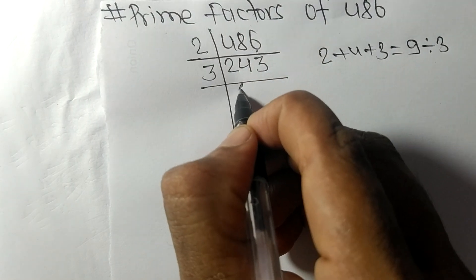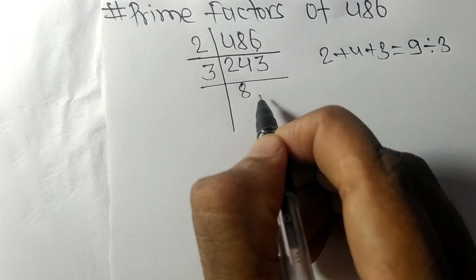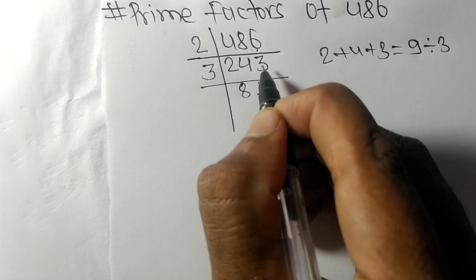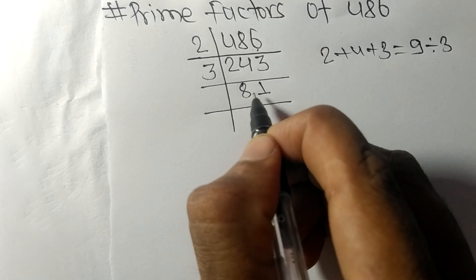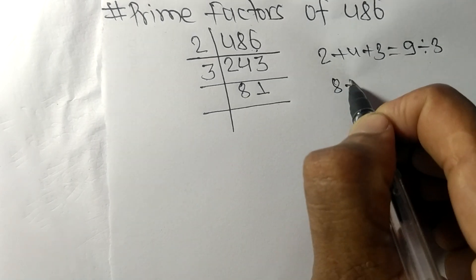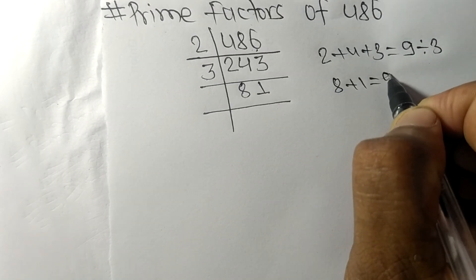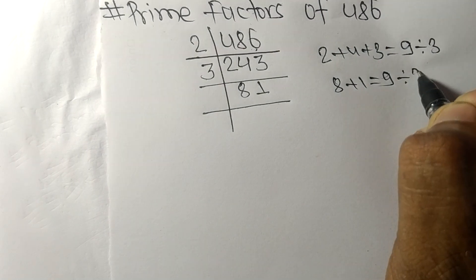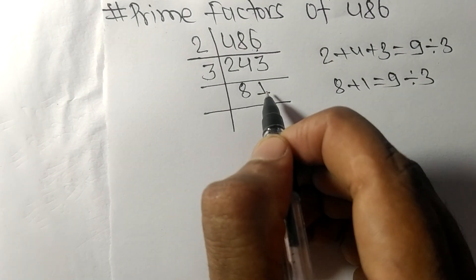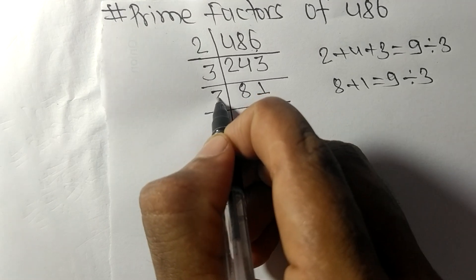3 times 8 means 24, 3 times 1 means 3. Now we got 81. And when we add 8 plus 1, then we get 9, and 9 is exactly divisible by 3, so 81 is also divisible by 3.